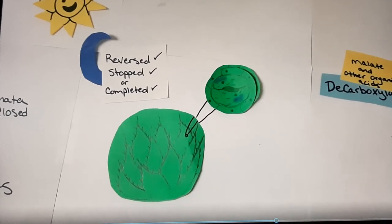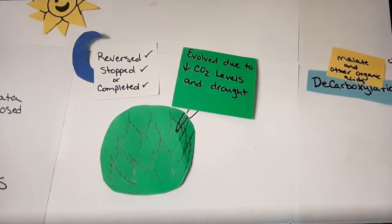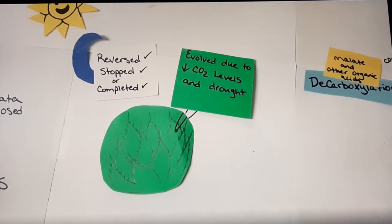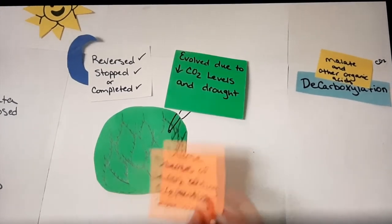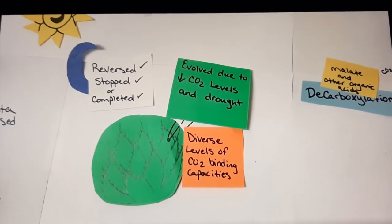CAM plants have a higher variation in species and are thought to have evolved due primarily to drought and conditions causing low carbon dioxide abundance. CAM plants have diverse levels of carbon binding abilities and are better equipped to hold water and use it efficiently.